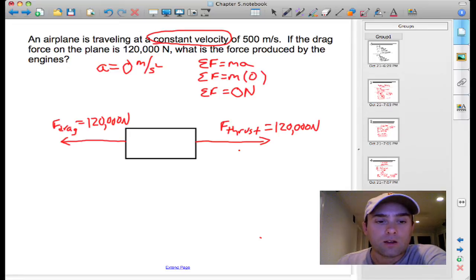So again, the way this picture is drawn, these two are in equilibrium. You have 120,000 in drag, 120,000 acting as the thrust of the engines pulling the plane forward. Those forces are balanced once the plane remains at a constant velocity of 500 meters per second.